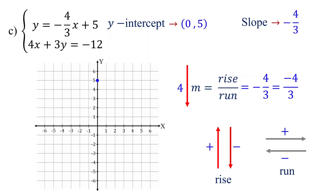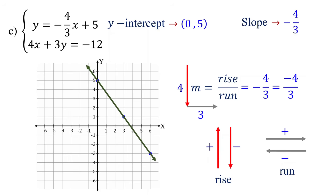Now, starting from the y-intercept, move down 4 units, then move to the right 3 units, and plot the second point. Let's add one more point: starting from this point, move down 4 units and move to the right 3 units, and plot the third point. Then, connect these points with a straight line.